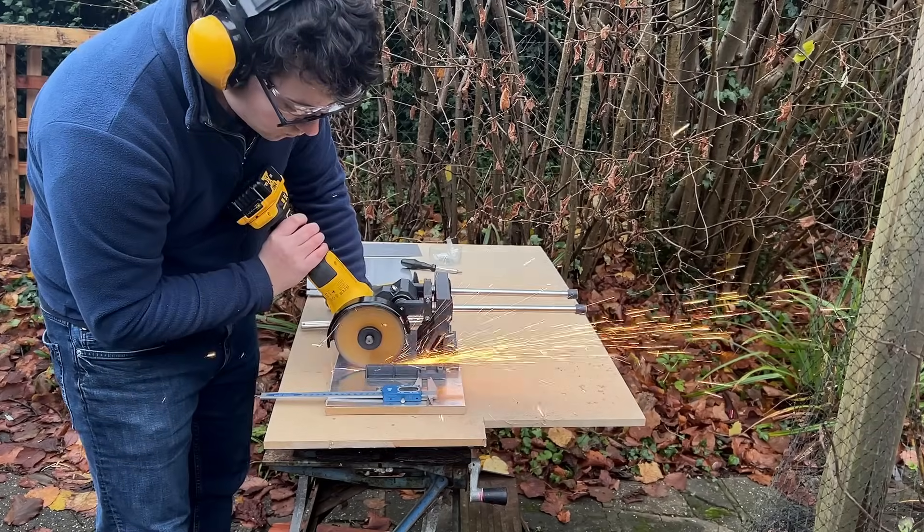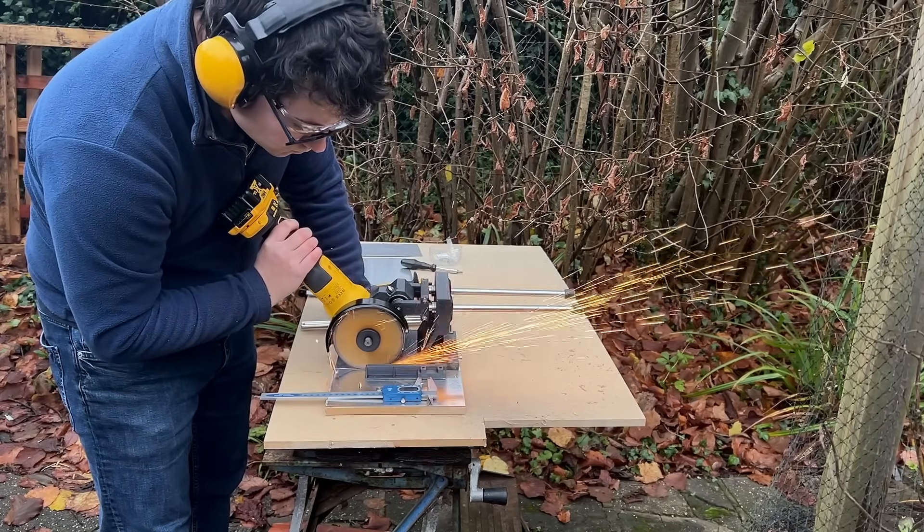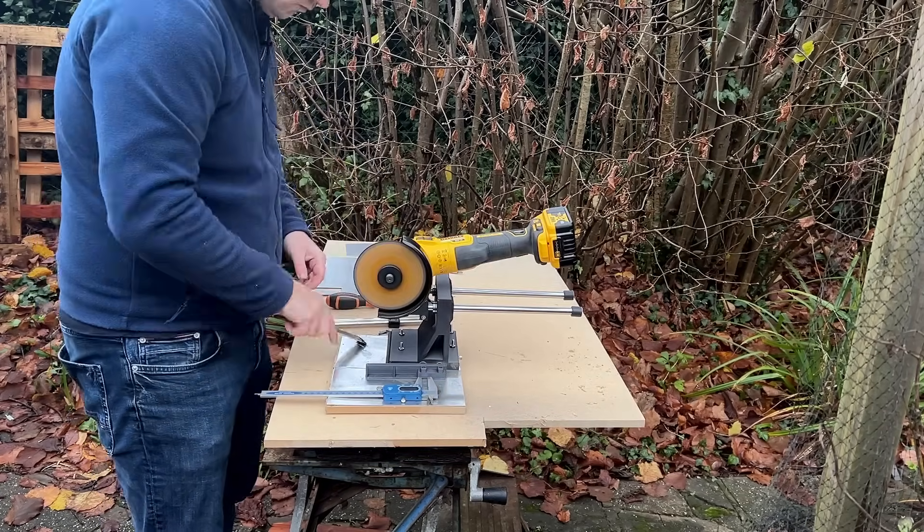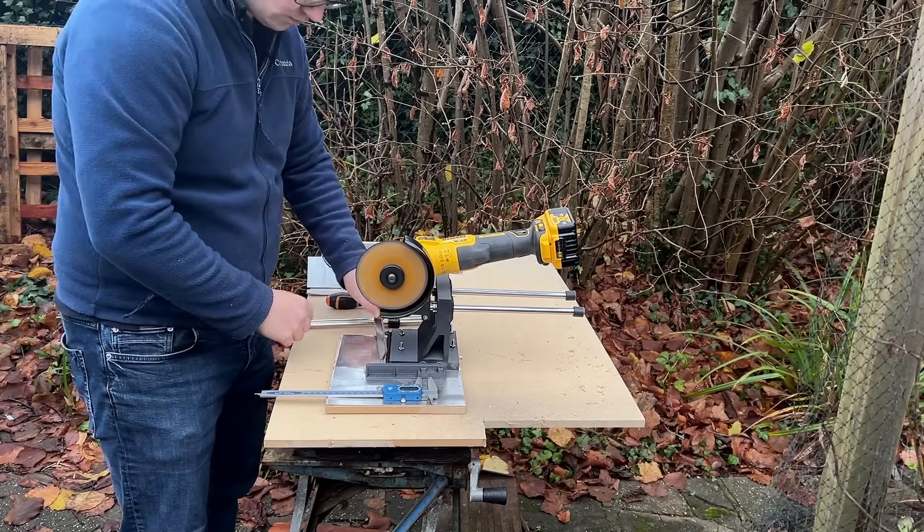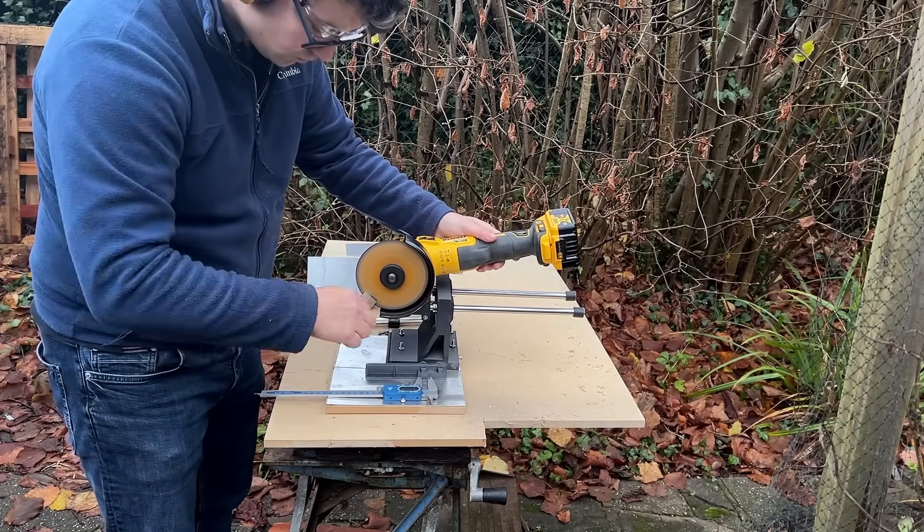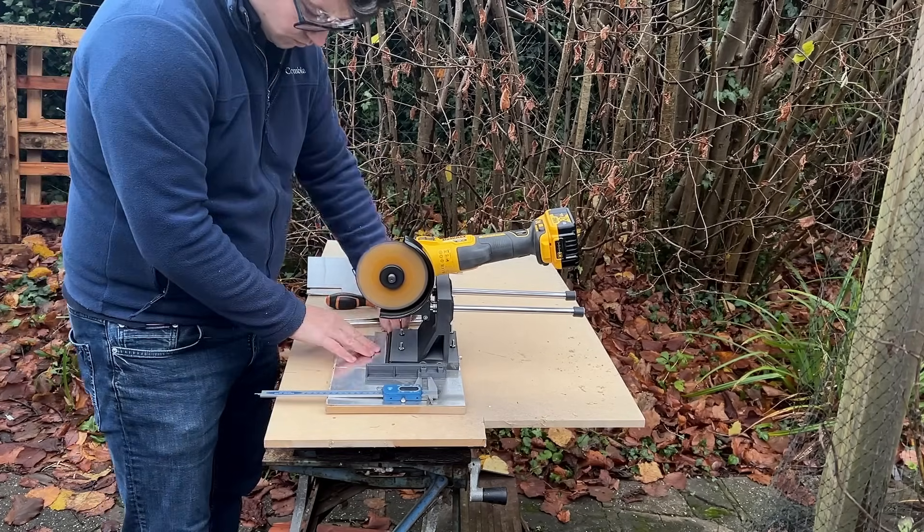We're also going to need to cut some 5mm thick strips of low carbon iron to use as the magnetic concentrators. To make this easy for myself, I decided to build a cross-cutting jig for my grinder. This design also incorporates a fence to make cutting the same dimensions easy.